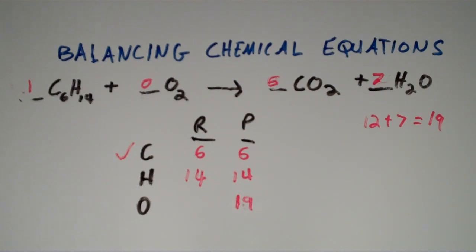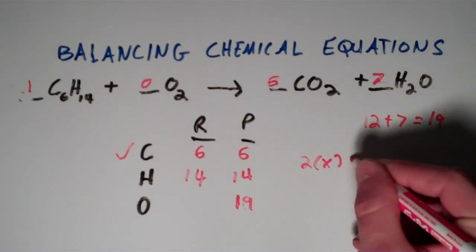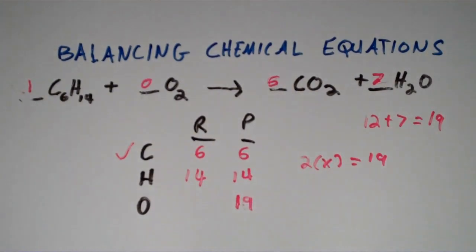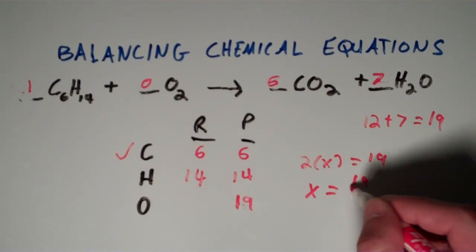So now, in other words, what we have to do is we have to use a fraction. So what I like to do is I just like to say two times x equals 19, and then just solve for x, and you'll get x is equal to 19 halves.